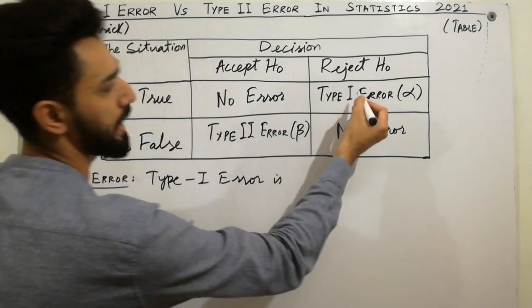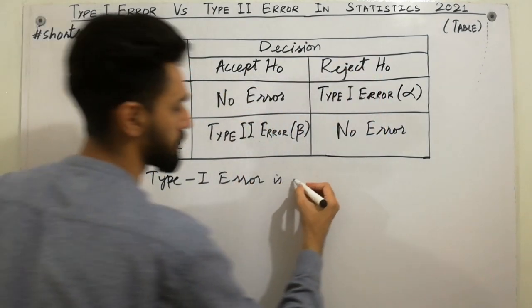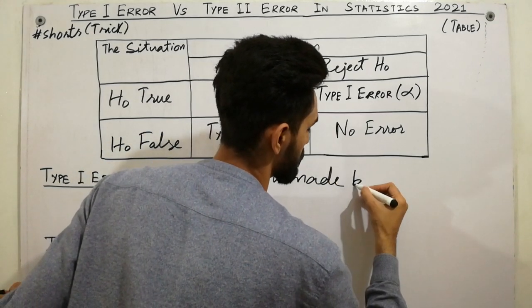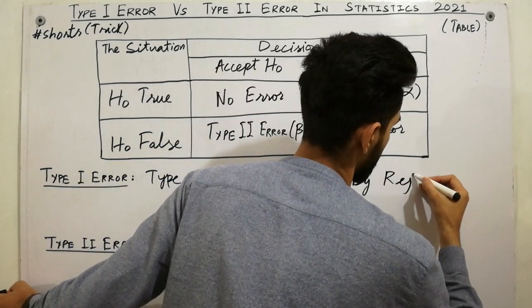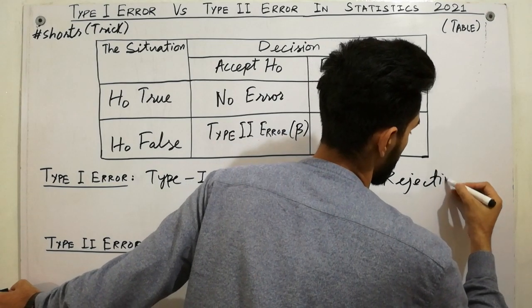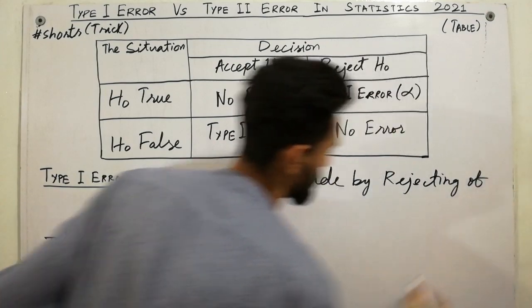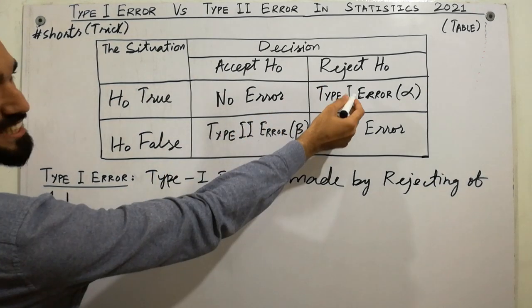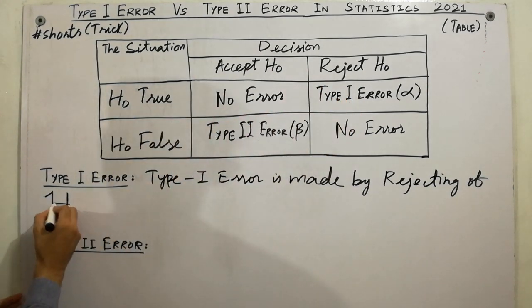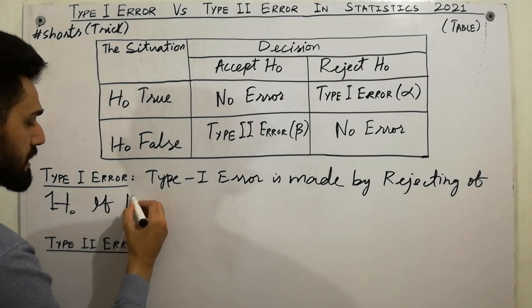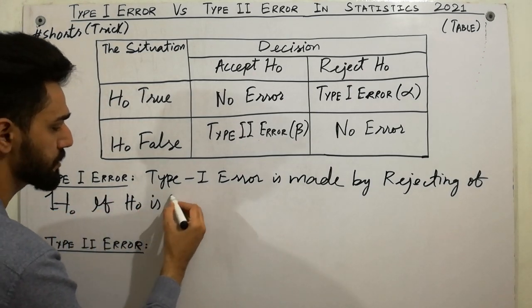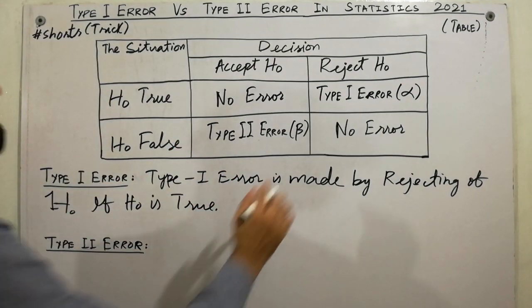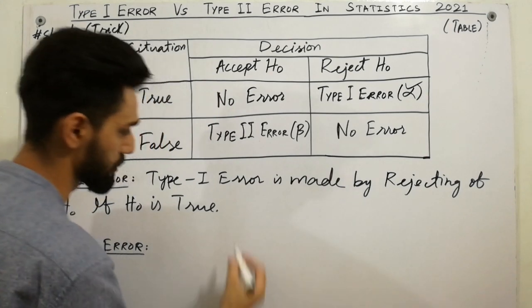Is made by rejecting of H₀ if H₀ is true. If H₀ is true, very very easy definition of Type I error. And must remember, Type I is denoted by alpha. You can write here Type I error is always denoted by alpha. That's clear.